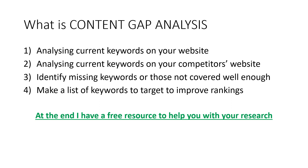Analyze what you're doing, analyze what your competitors are doing, and identify missing keywords or those not covered well enough. Then make a list of these keywords to target in order to improve your rankings. You might come up with hundreds of keywords from your research, but content gap analysis helps you figure out where to actually start — find what's easiest to rank for, find where you can out-compete your competitors, and turn that into a focused list. I have a free resource for you at the end of this presentation to help with this.